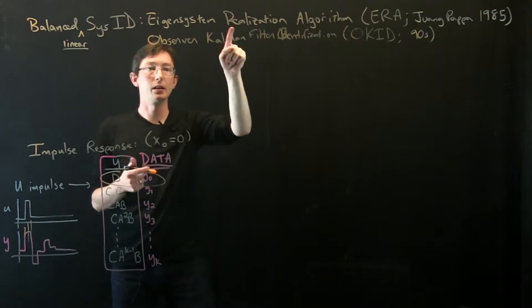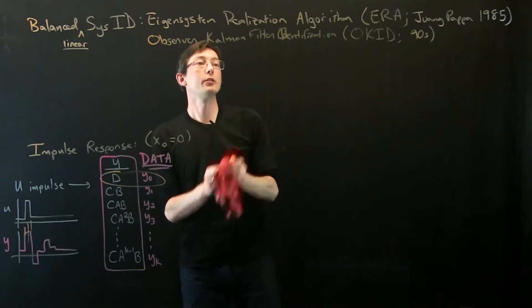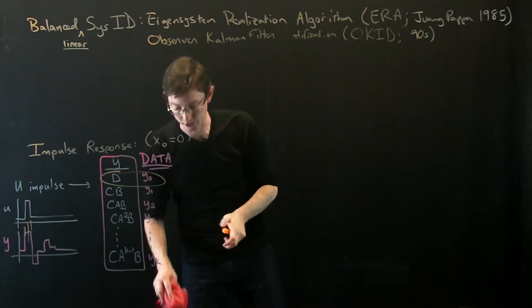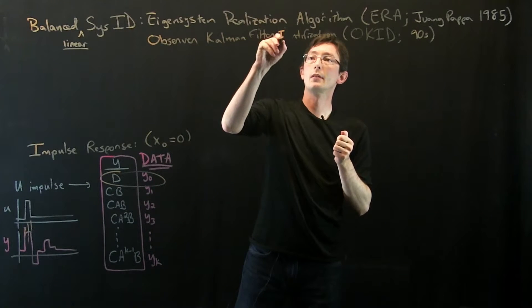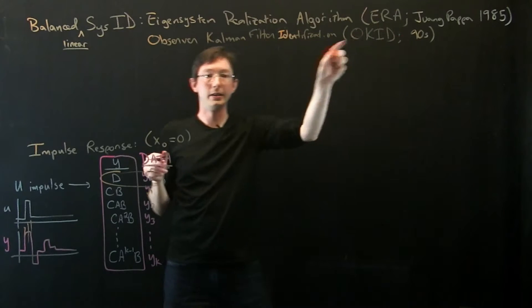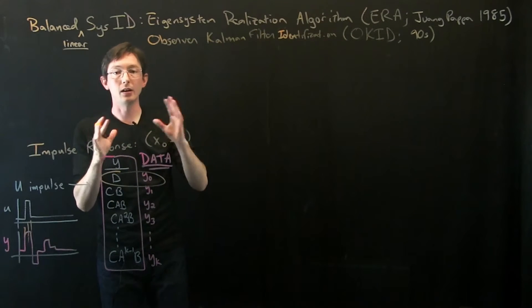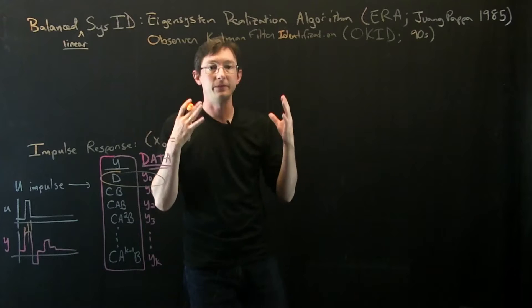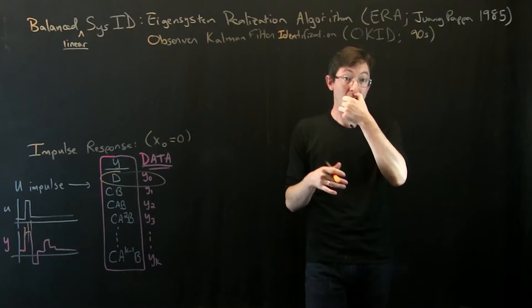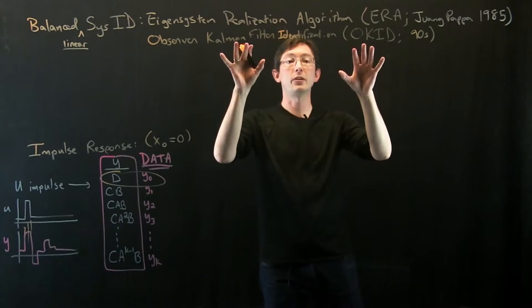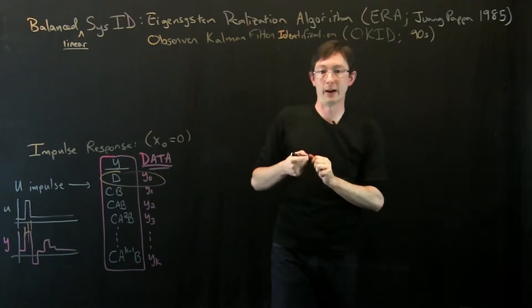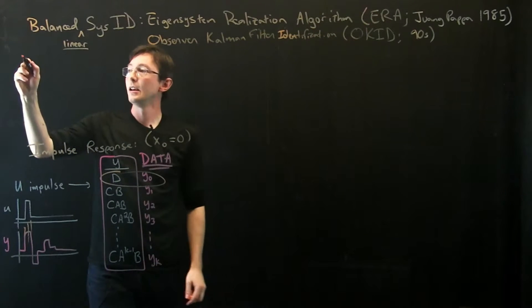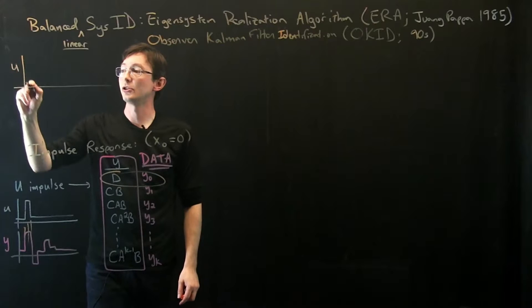Observer Kalman Filter Identification. And so this is kind of a one-two combo. If you have noisy tough data, you can't do an impulse response, you take that data, you first hit it with OKID and then you hit it with ERA.